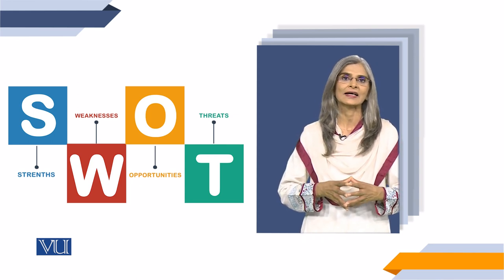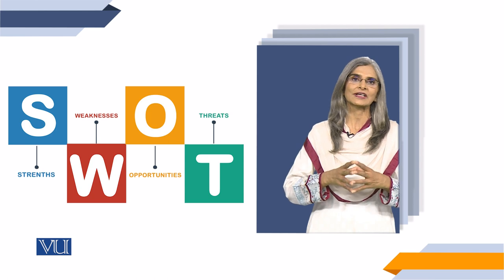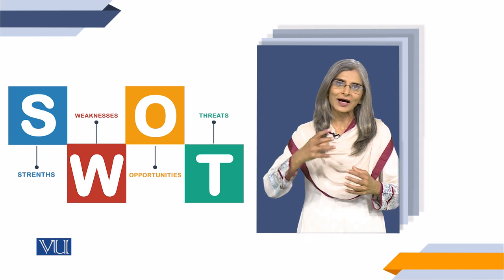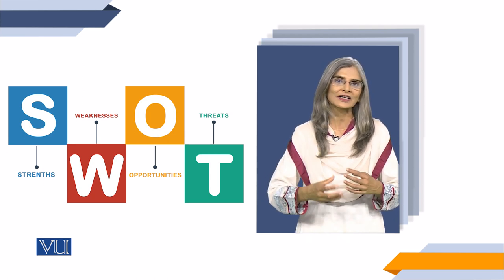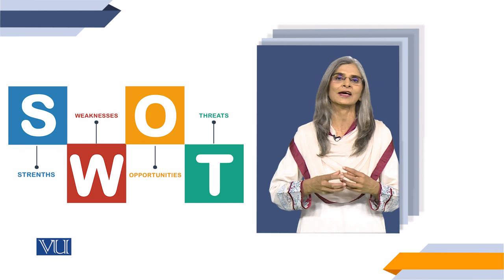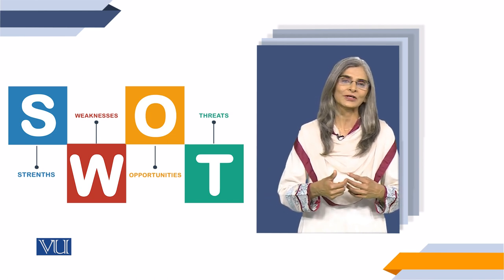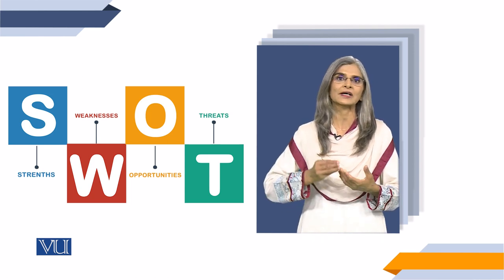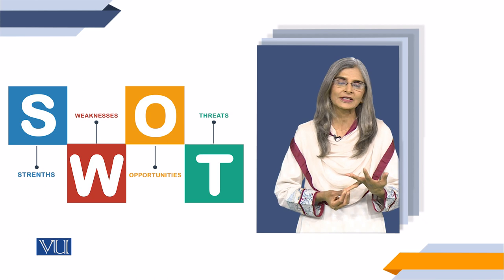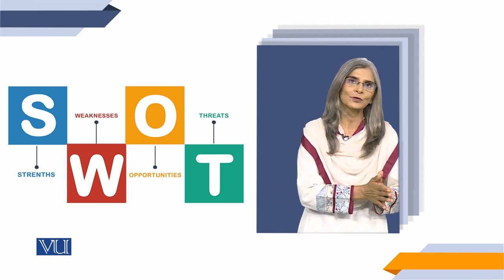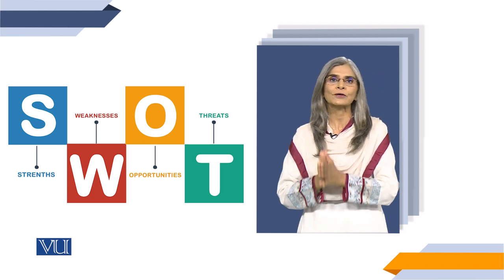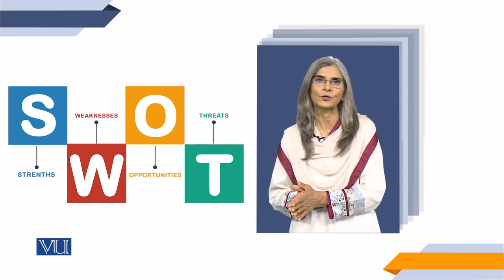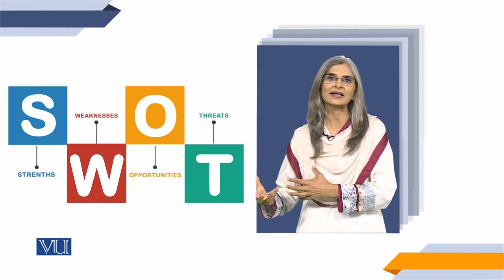These strengths and weaknesses are generally internal to operations — regarding what the social entrepreneur is doing, what initiative they are taking. For example, resources can be a factor, skill set can be a factor, community reception can be a factor. These things can be strengths if they are present, and weaknesses if they are lacking or absent.